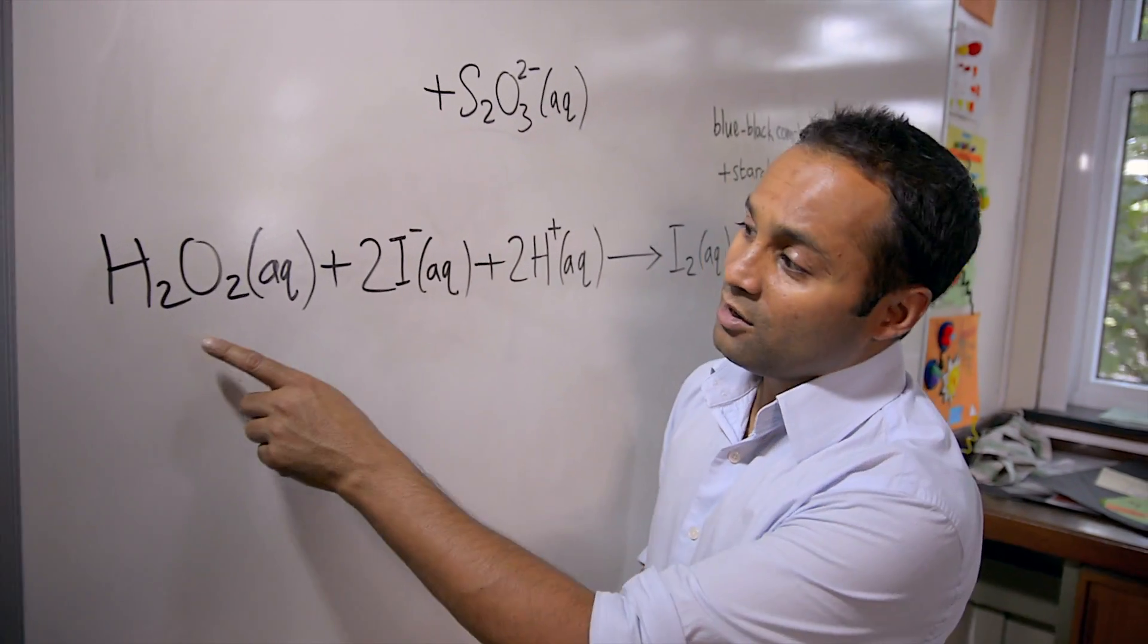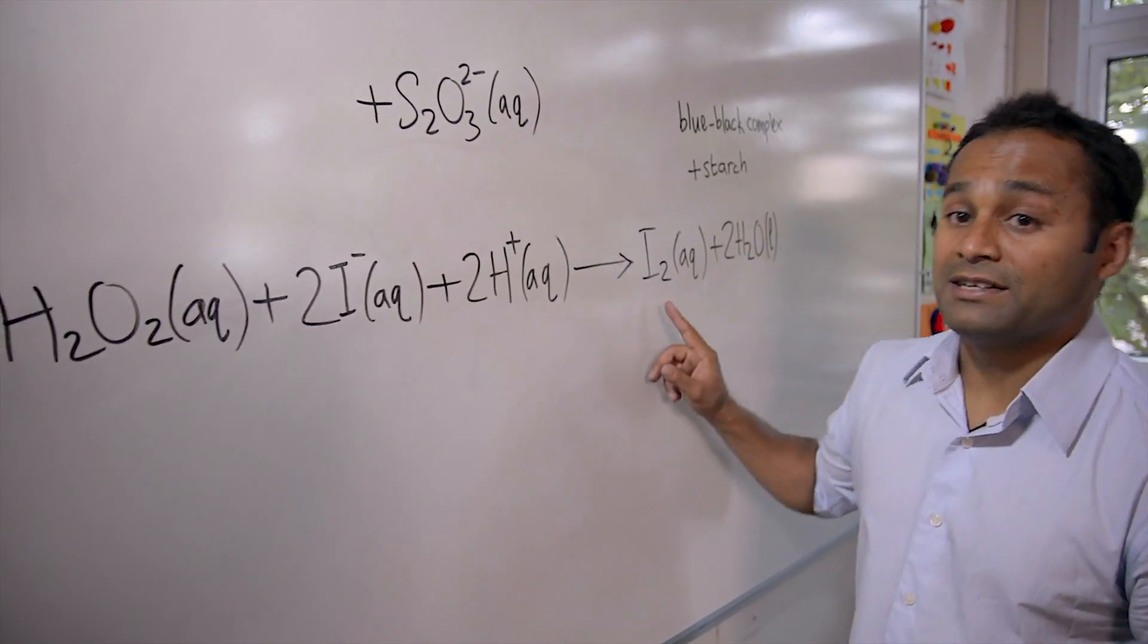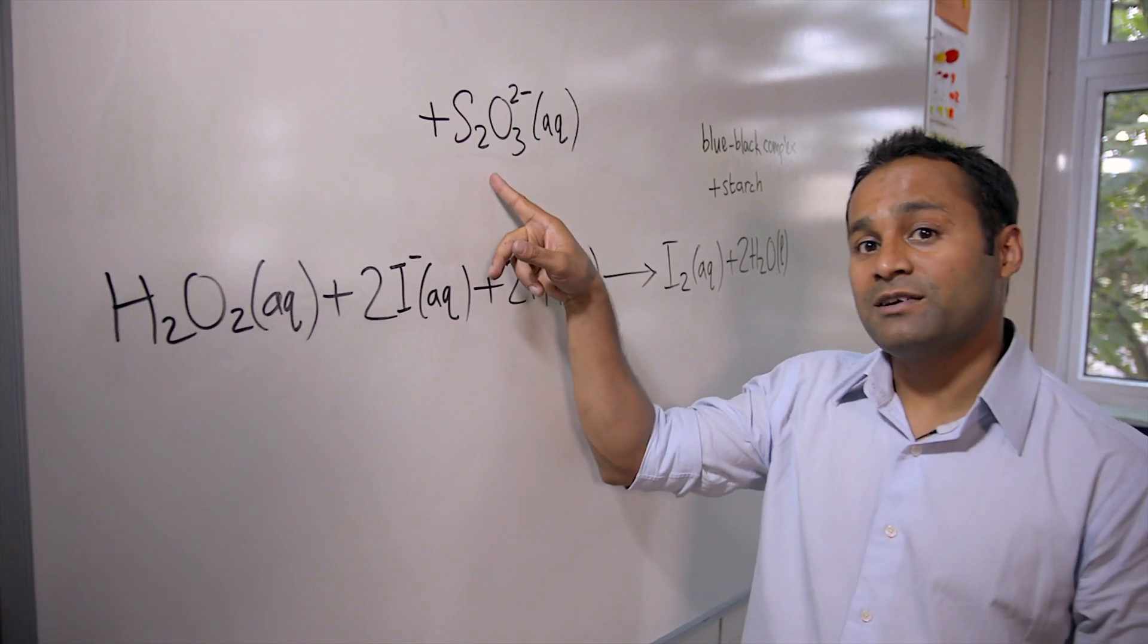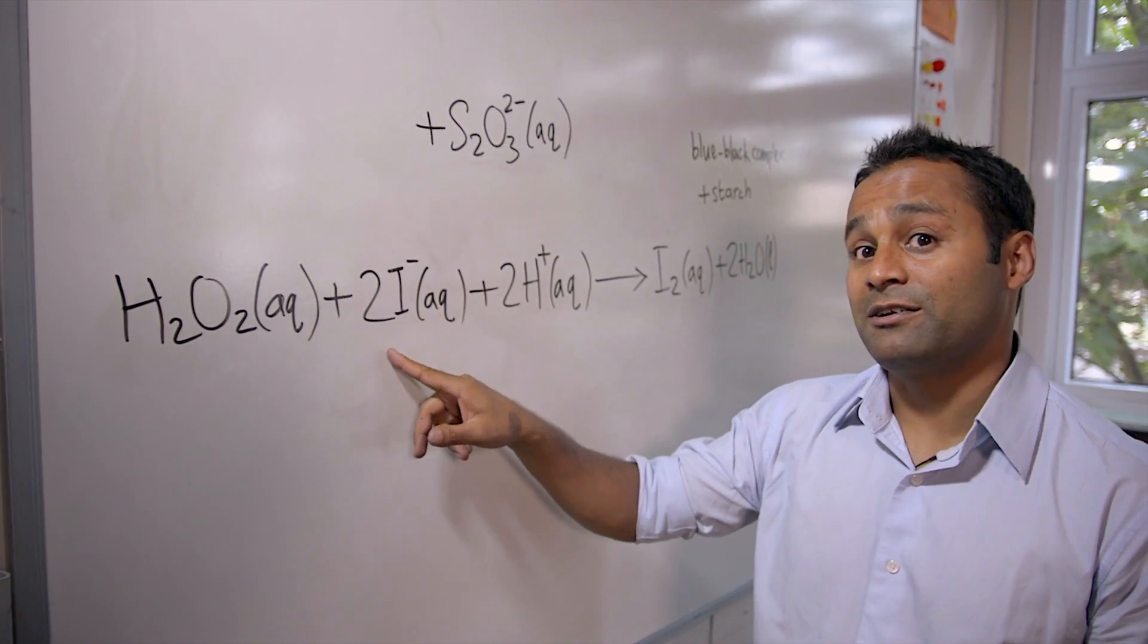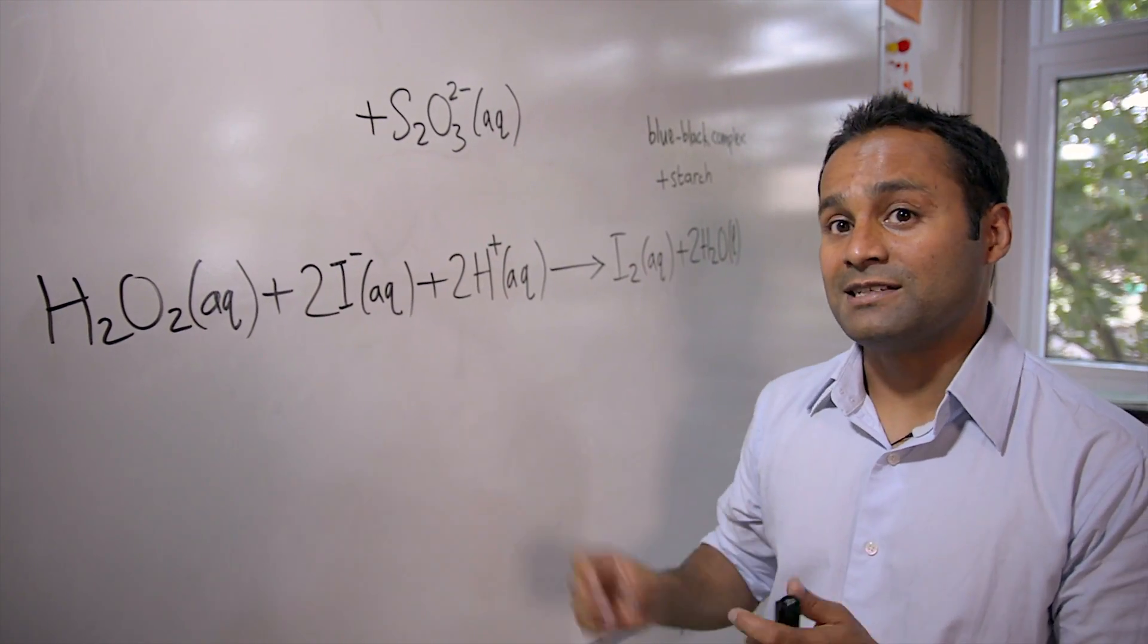When the solutions are mixed, hydrogen peroxide reacts with iodide ions to form iodine. As soon as the iodine forms, it reacts with thiosulfate ions and reverts to iodide ions. So as long as you have thiosulfate ions in the mixture, you don't get the color change. This happens by a very quick reaction.